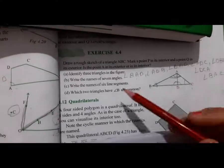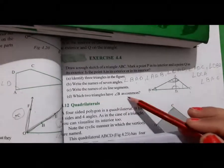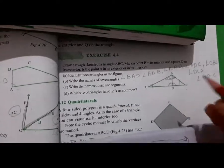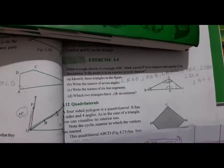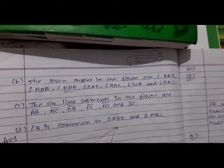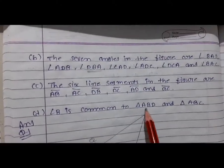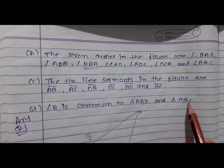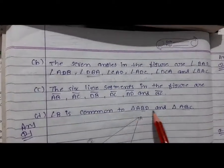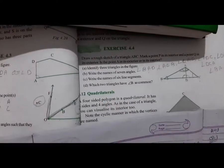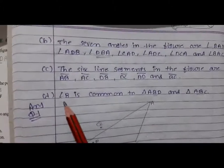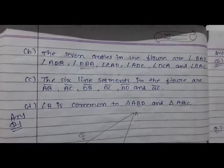Let's see which two angles have angle B in common. Angle B is common to angle ABD and angle ABC. These two angles have angle B in common.